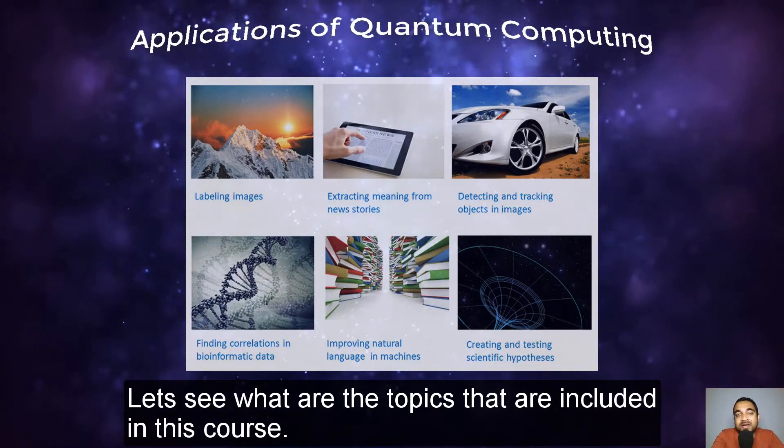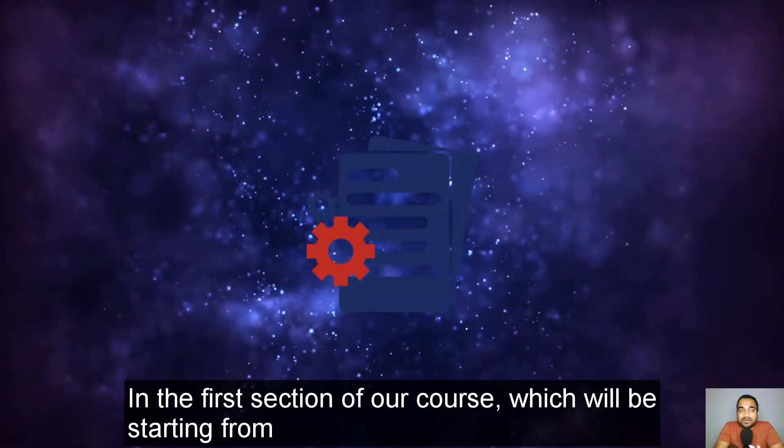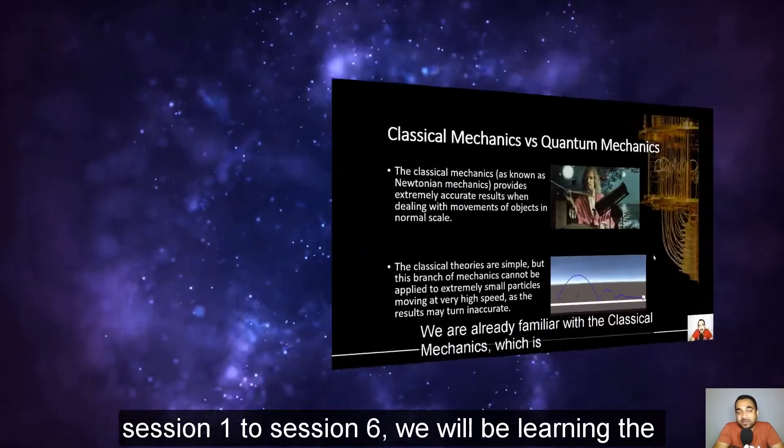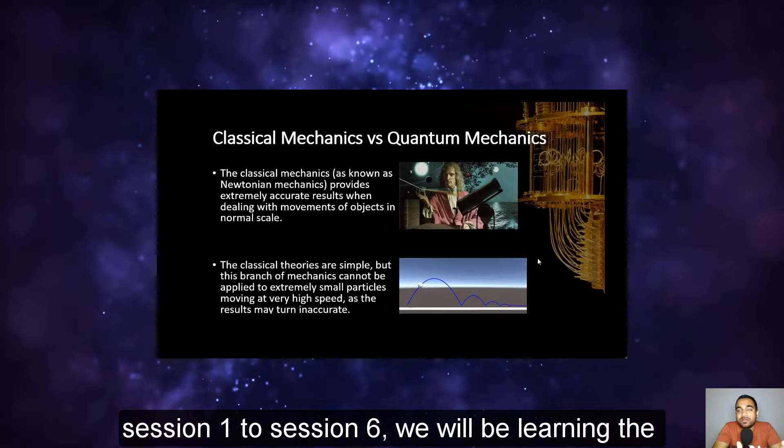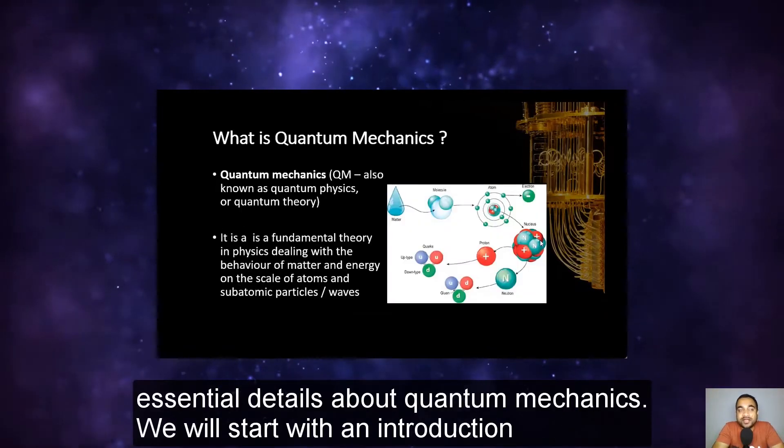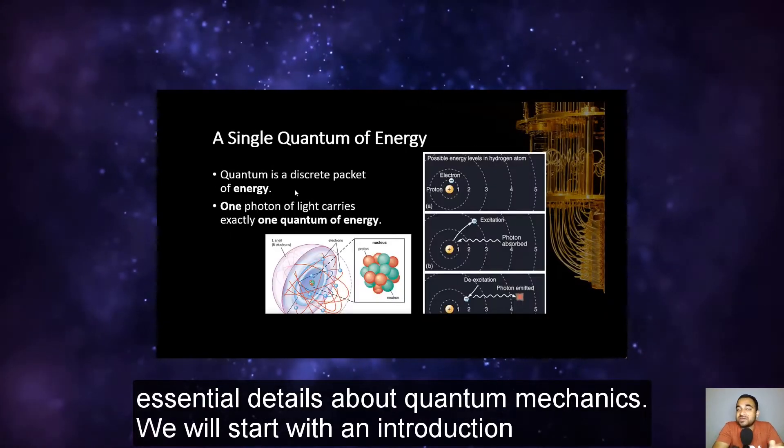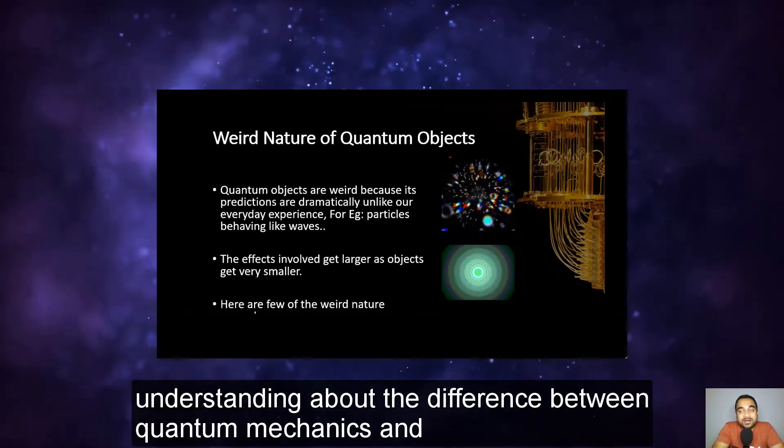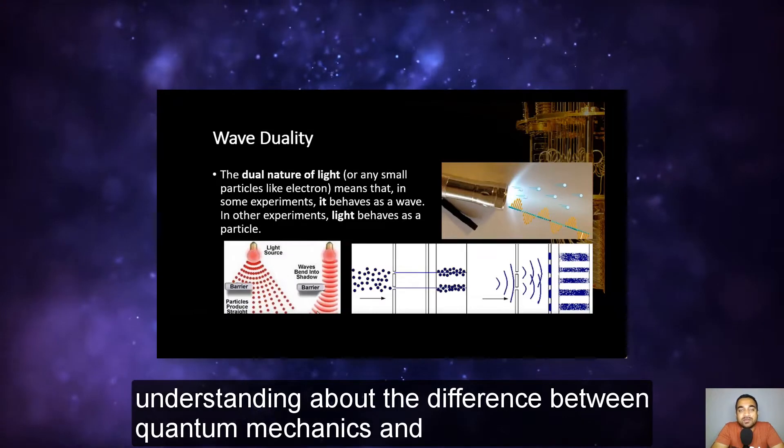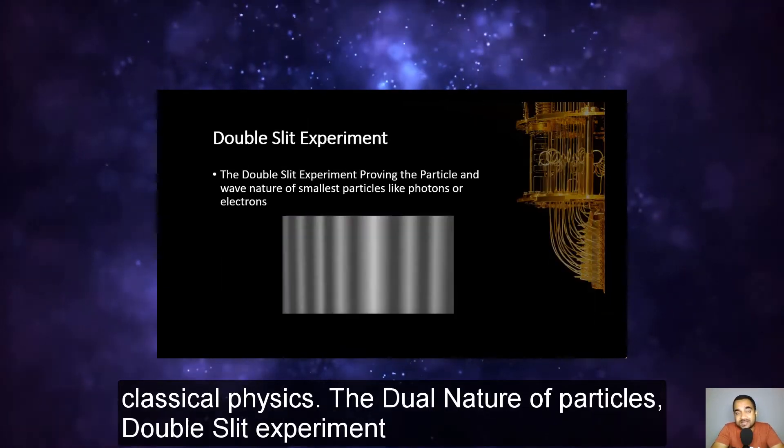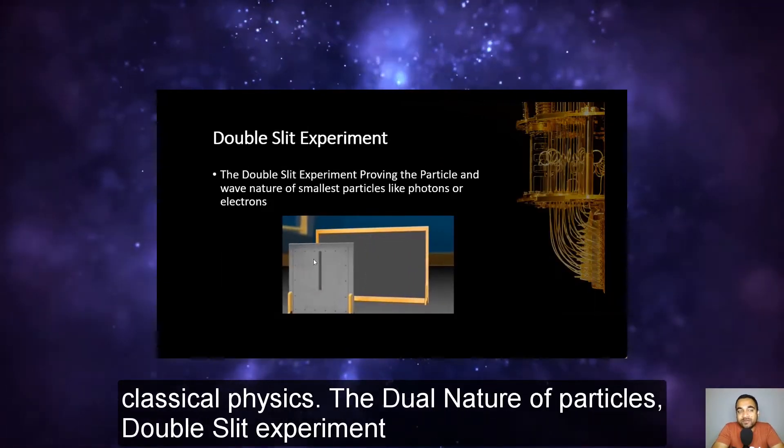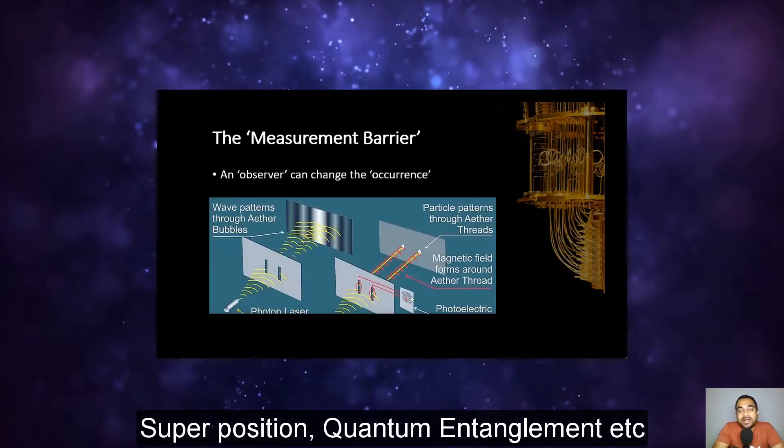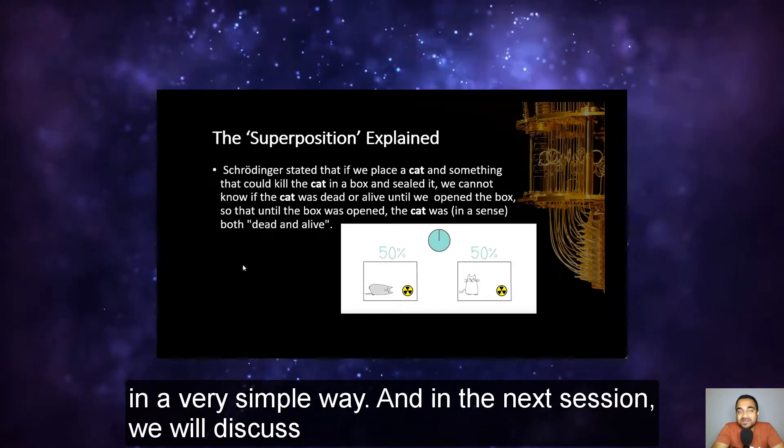Let's see what topics are included in this course. In the first section of our course, which will be starting from session 1 to session 6, we will be learning the essential details about quantum mechanics. We will start with an introduction to quantum mechanics and then try to have a quick understanding about the difference between quantum mechanics and classical physics, the dual nature of particles, double slit experiment, superposition, quantum entanglement, etc. in a very simple way.